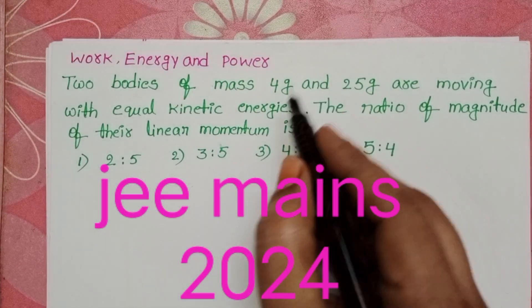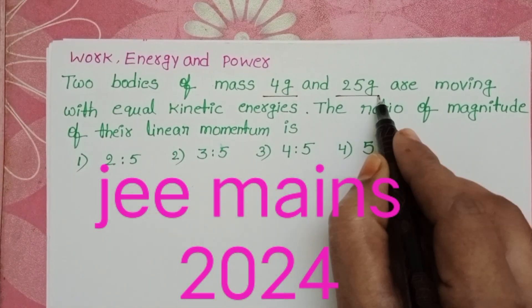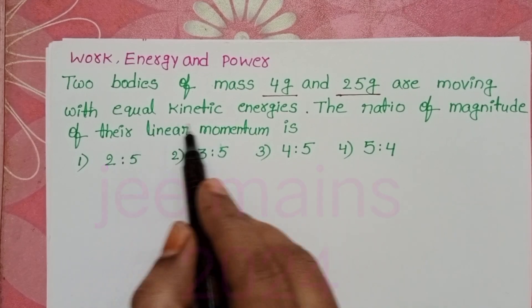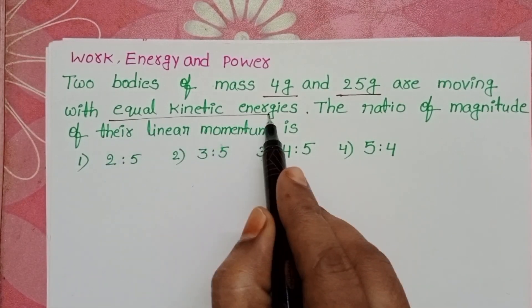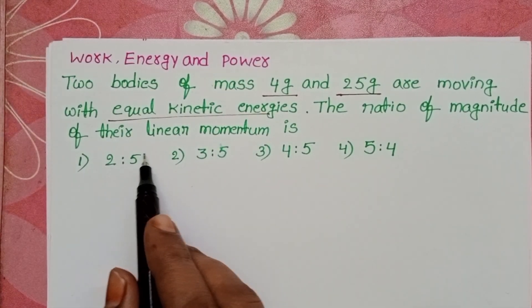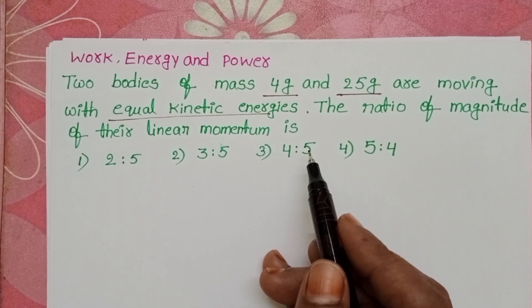Two bodies of masses 4 grams and 25 grams are moving with equal kinetic energies. The ratio of magnitude of their linear momentum is?